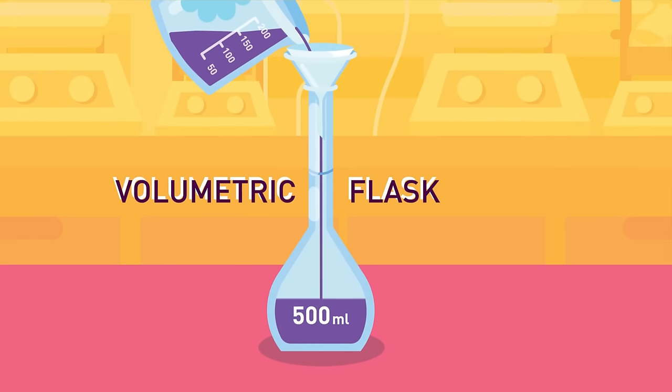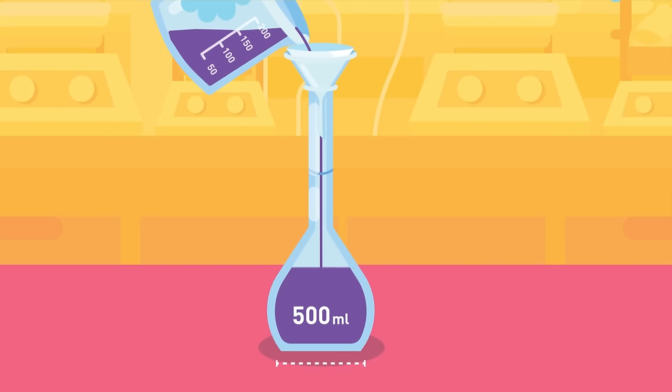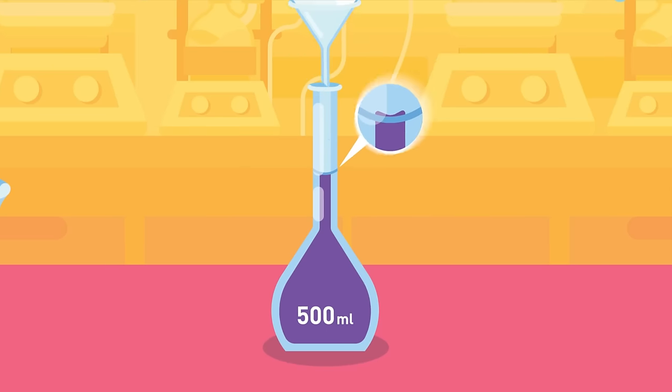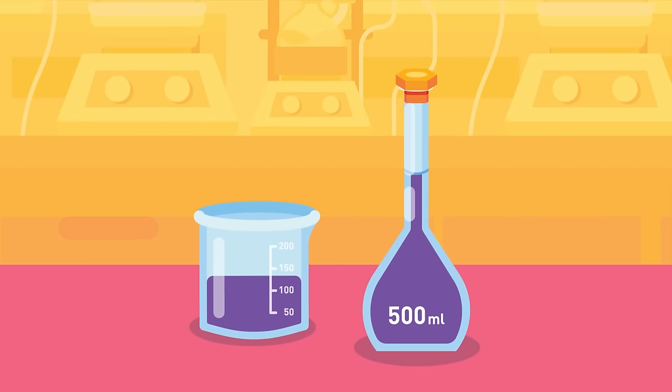Volumetric Flask. A volumetric flask is a round flask with a long neck and a flat bottom. It is used to prepare solutions to an accurate volume. There is a small line on the neck that indicates how far to fill the bottle. They come with special caps to prevent contamination and leaks.